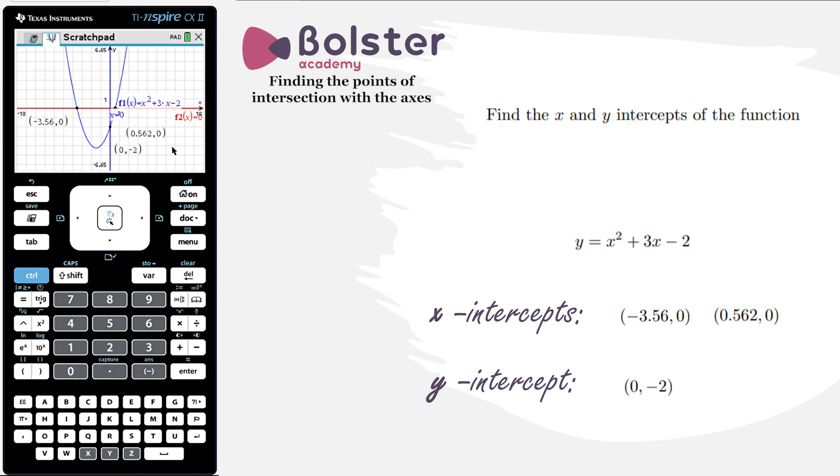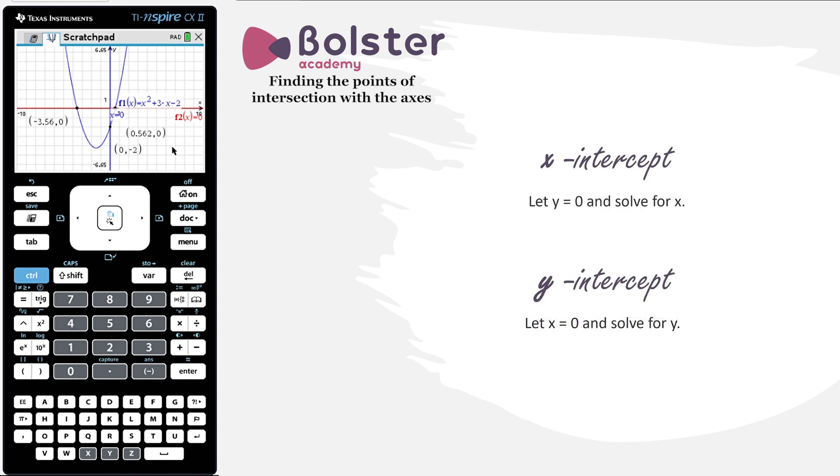So this is a fairly easy way on our GDC to find x-intercepts and y-intercepts. Just find where does the graph intersect the x-axis, which has the equation y equals zero. And find where does the graph intersect the y-axis, which has the equation x equals zero.